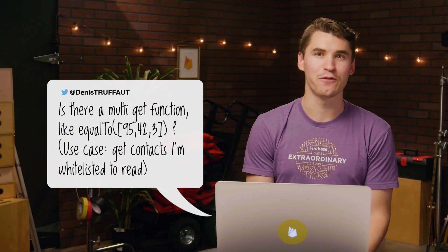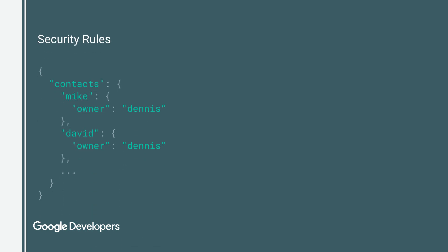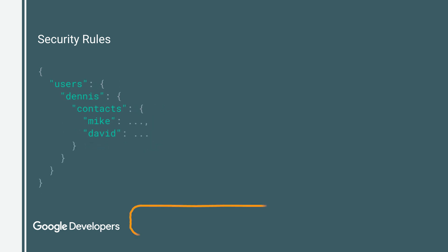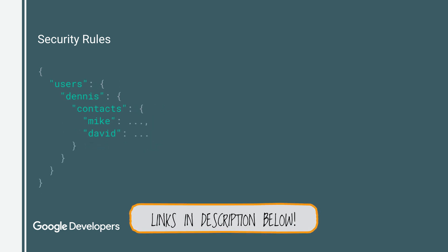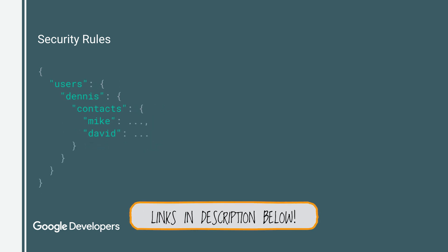A follow-up question from Dennis: is there a multi-get function, like equal to an array of numbers? The use case: getting contacts that I'm whitelisted to read. Well, Dennis, you'll want to arrange your data in a way that you can perform a single read and get all of the data that you need. Instead of maintaining a full list of your contacts and querying to get the ones associated with you, imagine flipping that around and keeping a list of the contacts that you own on your user object. Happy hacking, Dennis.